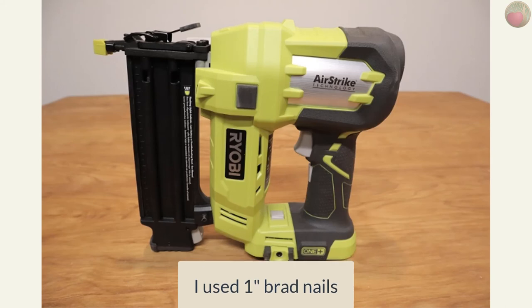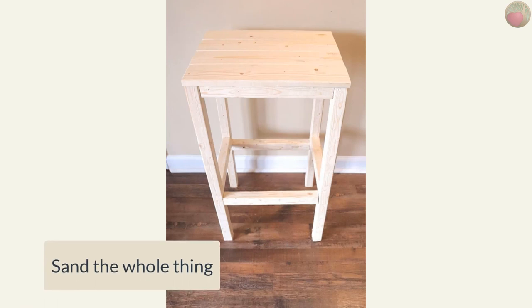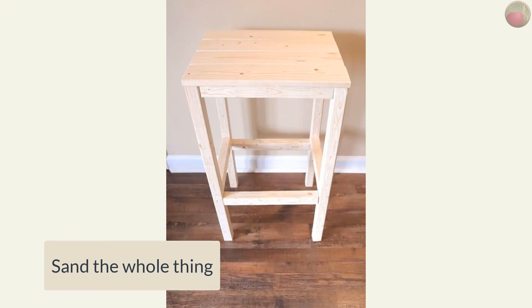And then sand the whole thing if you like. Now some of the two by twos I had were pretty rough, and I wanted to ensure I didn't get splinters from them. The one by fours were already pretty smooth, but I put a light sand on them anyway, especially those end grains, so I wouldn't get any splinters while grabbing the stool too.